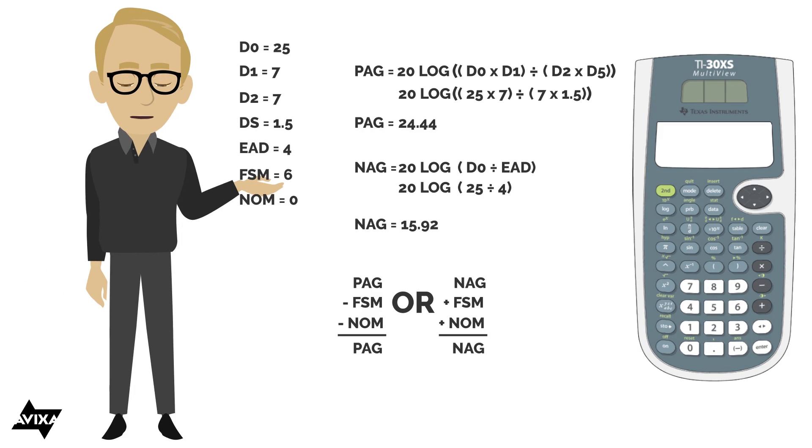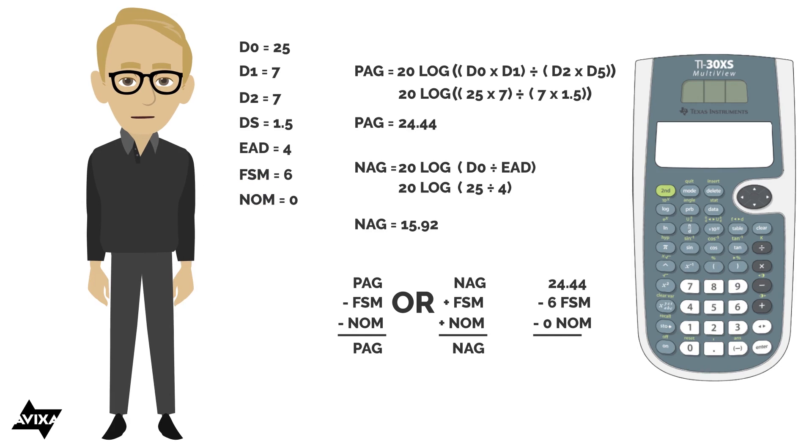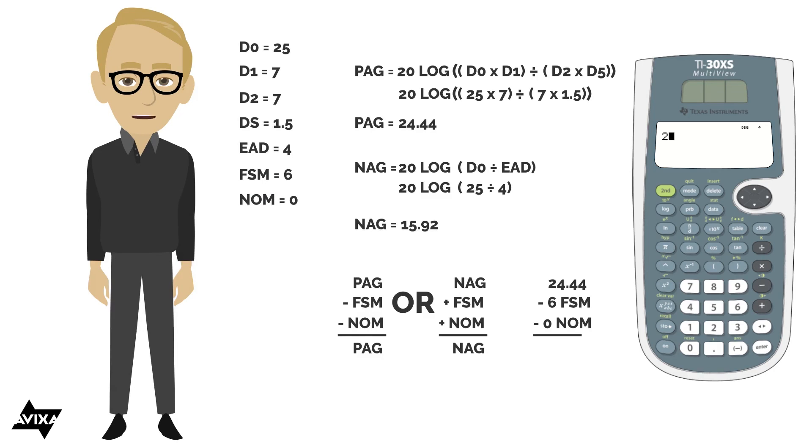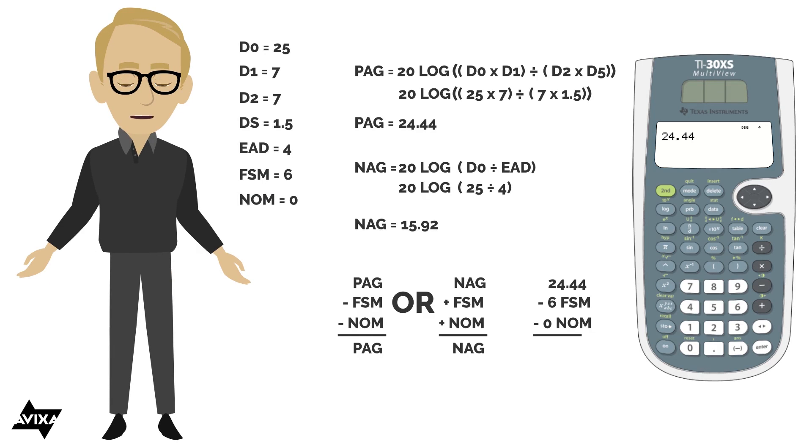Let's go ahead and subtract it from our PAG and see what we come up with. So let's get rid of all this for a moment. We have a PAG of 24.44. We set our feedback stability margin was 6 and NOM 0.